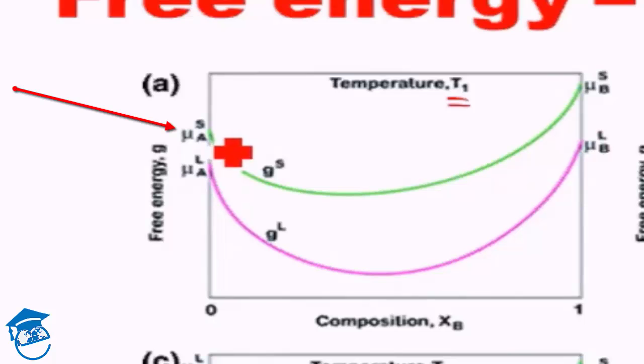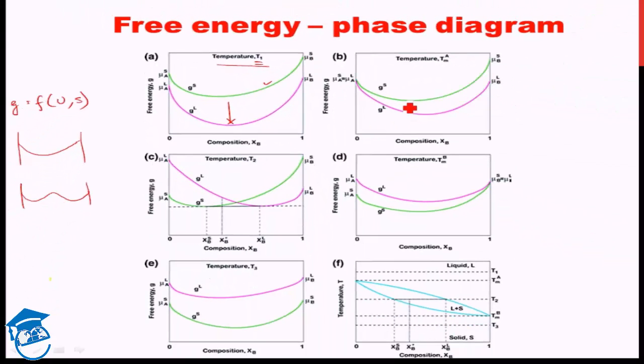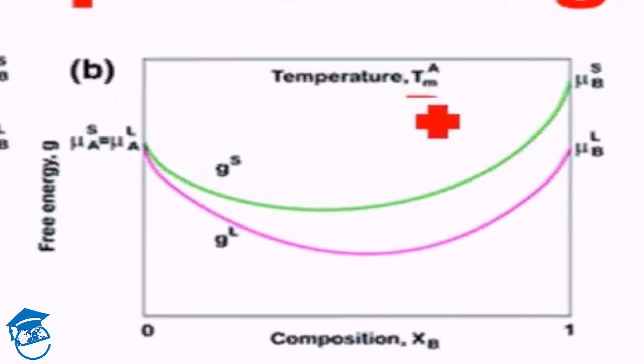What we observe is that for all composition - this is the composition axis, this is the free energy axis - for all composition, the free energy of the liquid is lower than the free energy of the solid. What this means is that at temperature T1, liquid is the stable phase throughout. Liquid is more stable than the solid state at any composition.